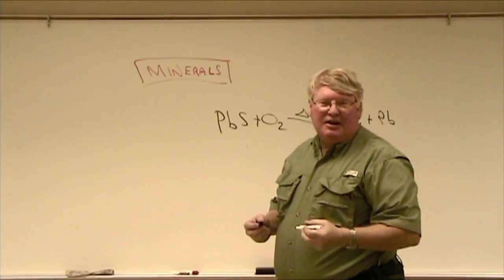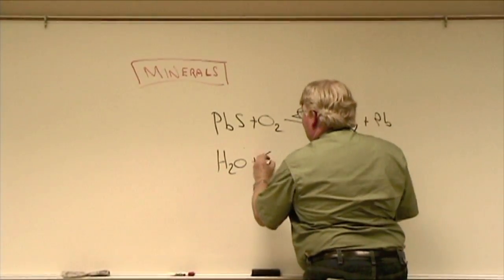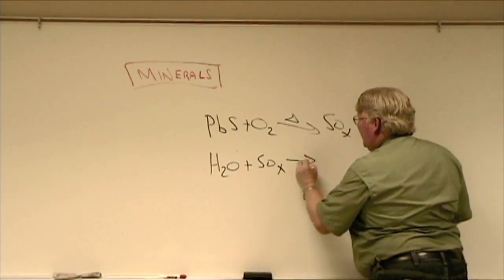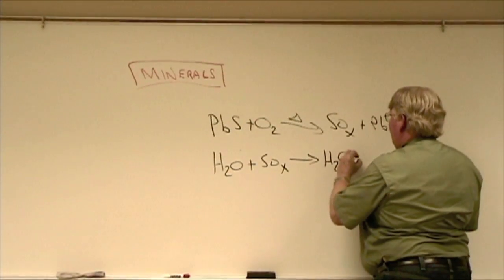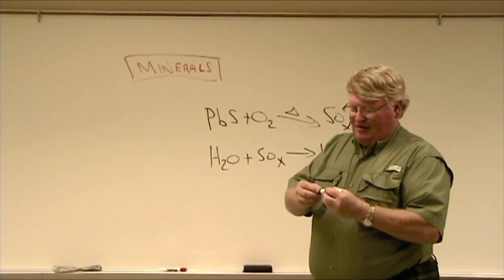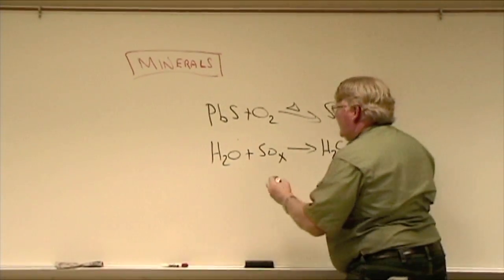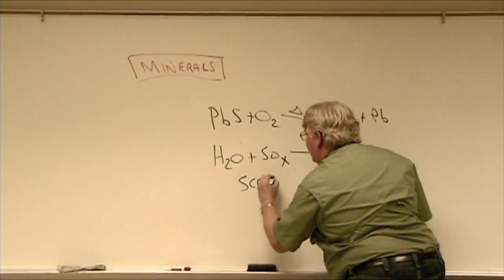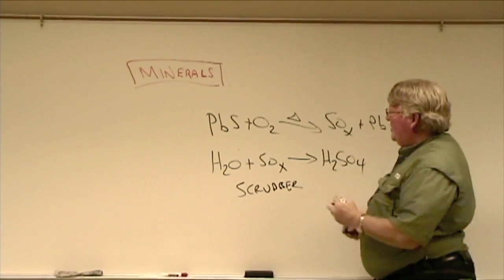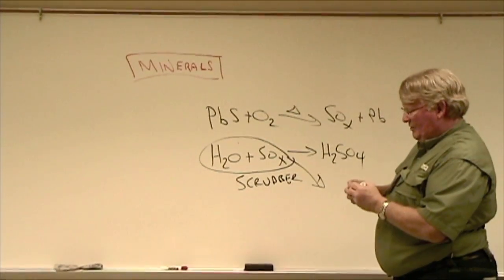The problem is sulfur oxides (SOx) are major pollutants because in the atmosphere, in the clouds, they react with water, and that makes sulfuric acid rain — H2SO4. So what we need to do now when we process these sulfur ores is use a wet gas scrubber, which in the stacks causes this reaction to occur, and then we can capture the H2SO4.